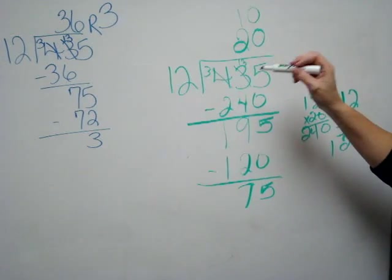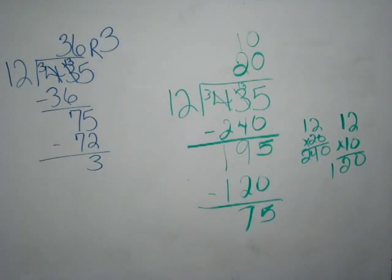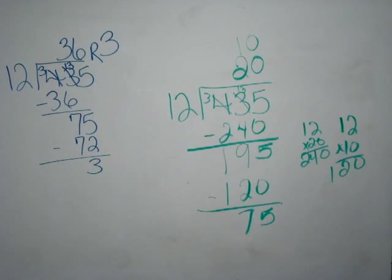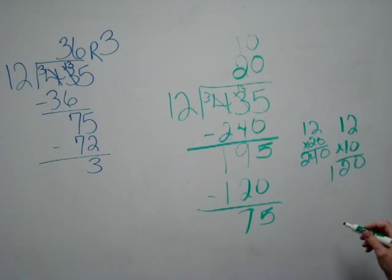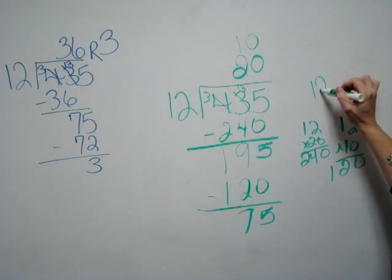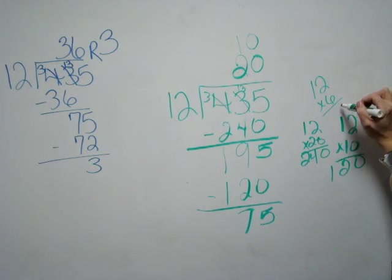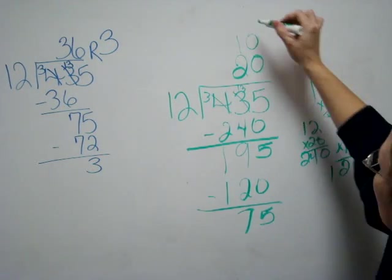Well, how many times can 12 go into 75? It's not going to go in evenly. I'm going to say 12 is going to go into 75 six times. So over here, 12 times 6, that's 72.